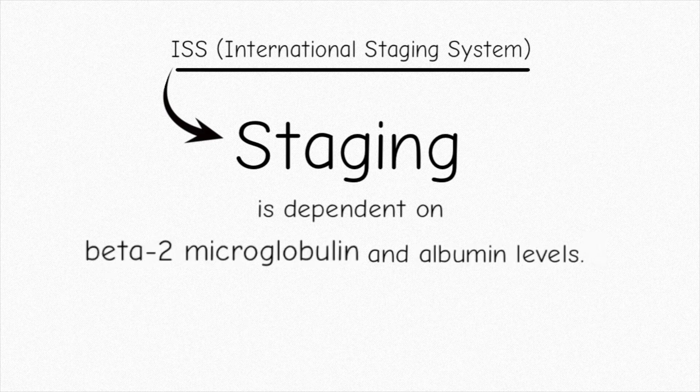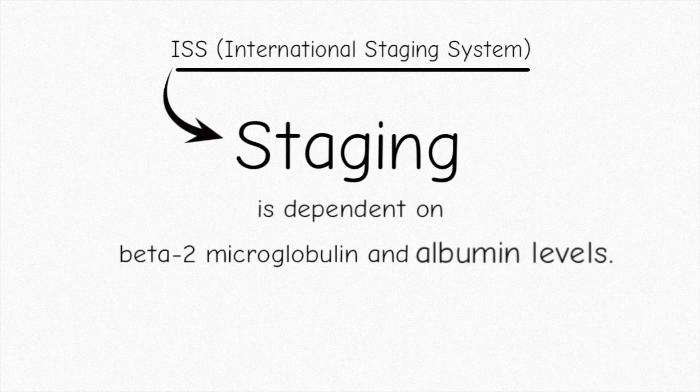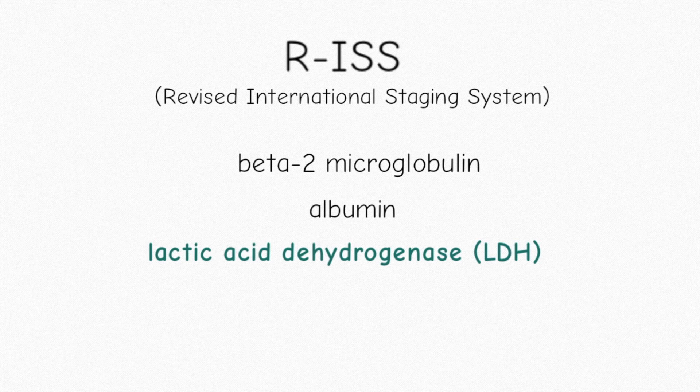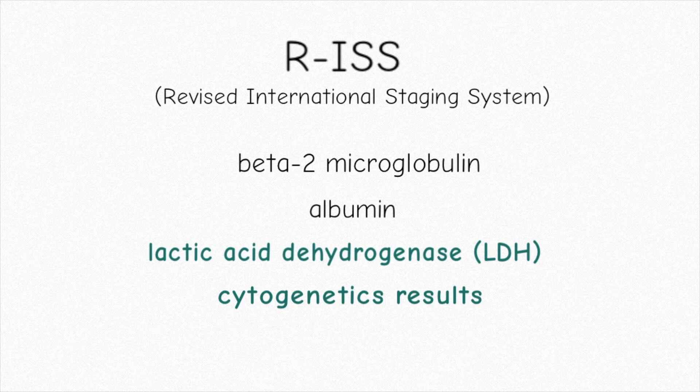This staging is dependent on the beta-2 microglobulin and albumin levels. There is another staging system called the Revised International Staging System. They use beta-2 microglobulin and albumin levels, as well as LDH levels and cytogenetic results. All4Cure does not record the RISS staging on the dashboard.